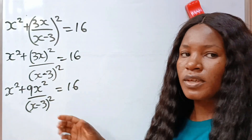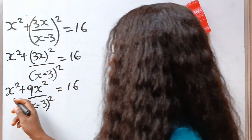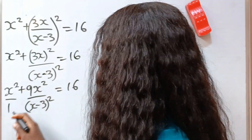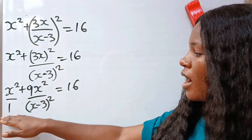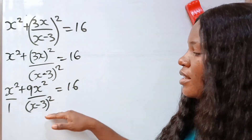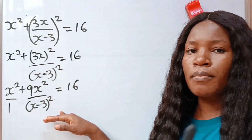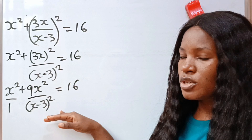Now let's solve this. This is the same thing as x squared over 1. The LCM of this and this is x minus 3 squared.